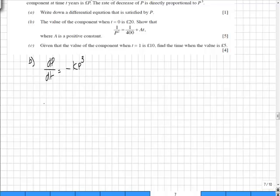So dividing through by p cubed we're going to get the integral of 1 over p cubed dp is equal to multiplying the power of dt minus the integral of k dt.